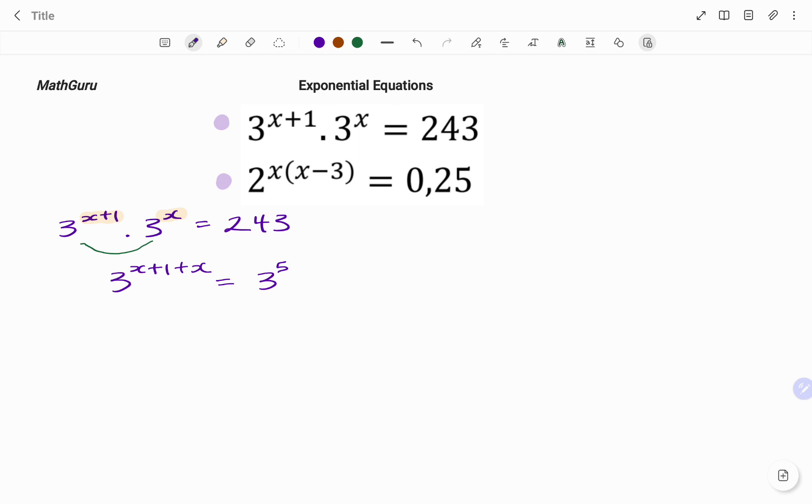Therefore, simplifying the left hand side, I have 3 to the power of x plus x, 2x plus 1 equals 3 to the power of 5. Note that we have the same base on both sides of the equation, and because I have a term each, what I'm going to do next is to equate the powers on both sides.